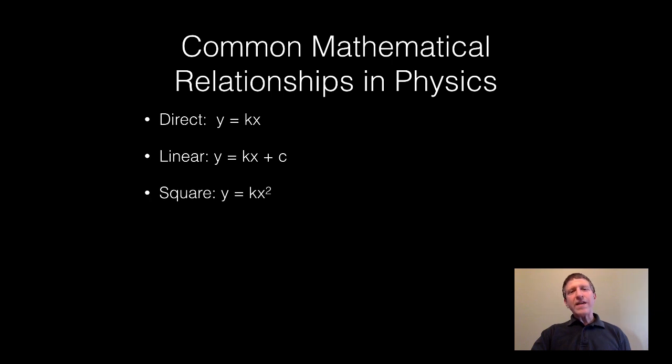We can have a square relationship where y equals kx squared, some constant k times x squared. And here's a case where k will not be the slope, so that's why I'm using the letter k there. It is just some constant.